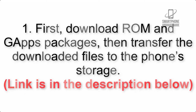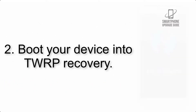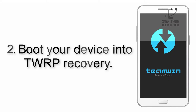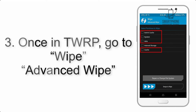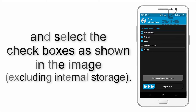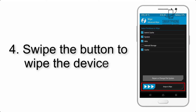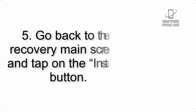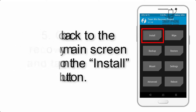Step 2: Boot your device into TWRP recovery. Once in TWRP, click on Wipe, then Advanced Wipe, and select the checkboxes as shown in the image, excluding internal storage. Step 4: Swipe the button to wipe the device. Step 5: Go back to the recovery main screen and tap on the Install button.